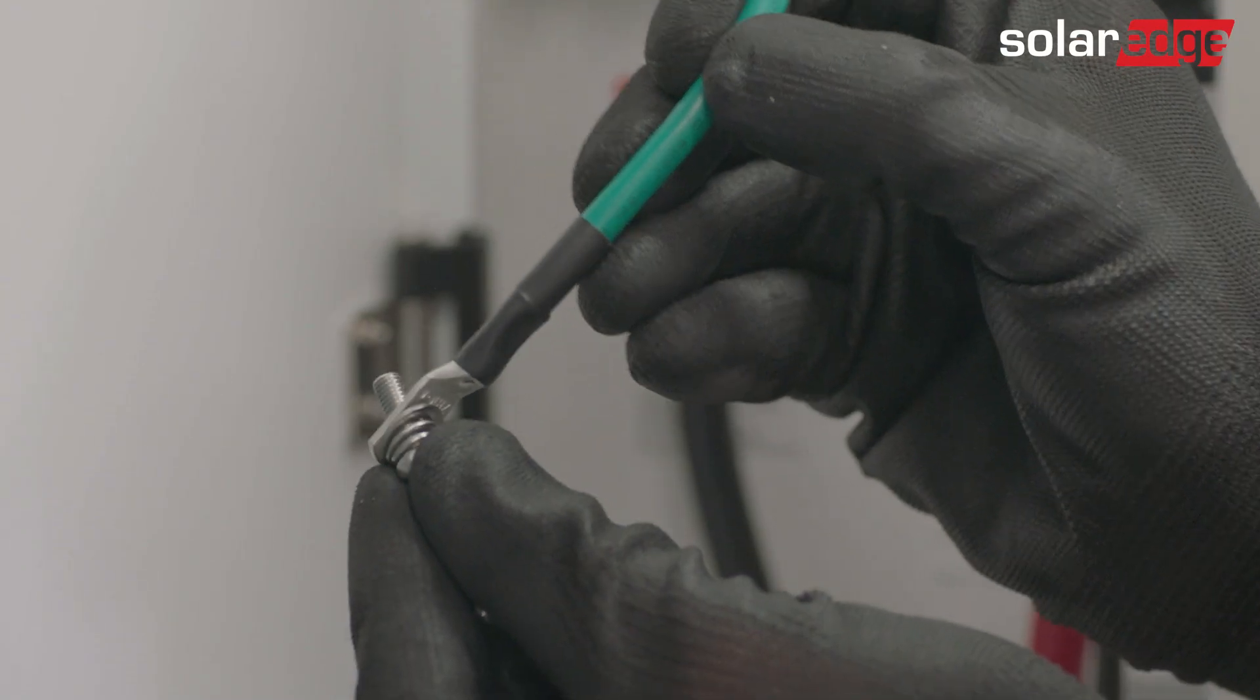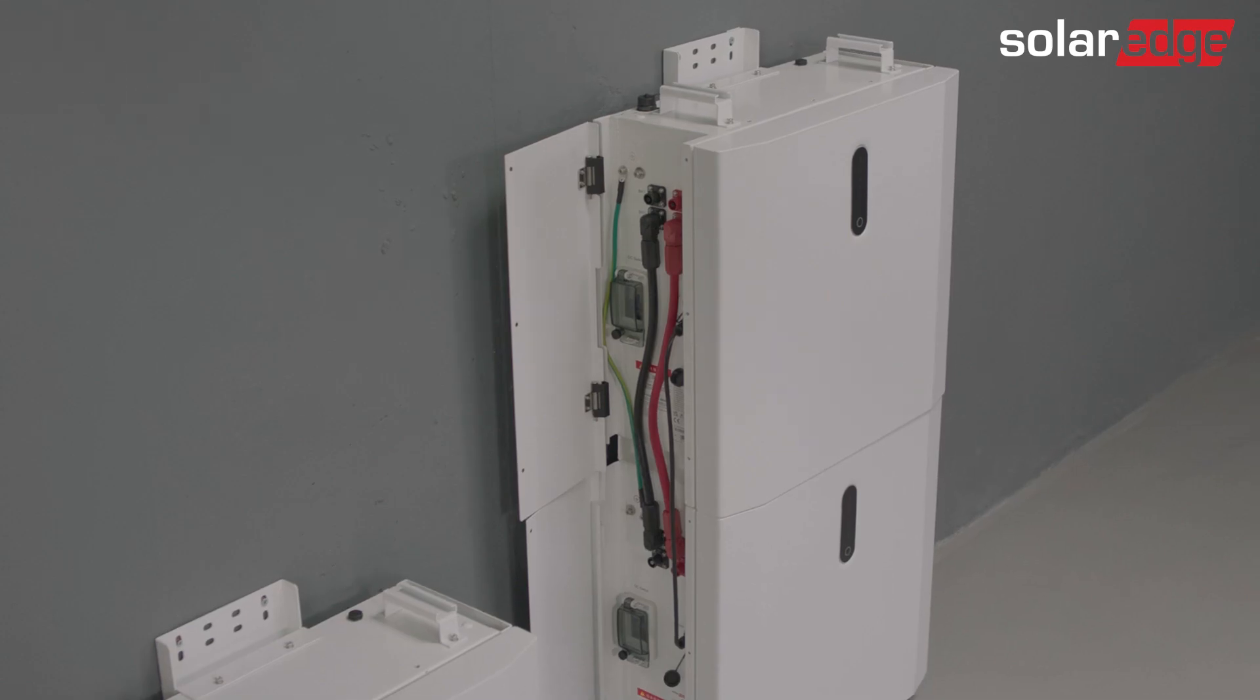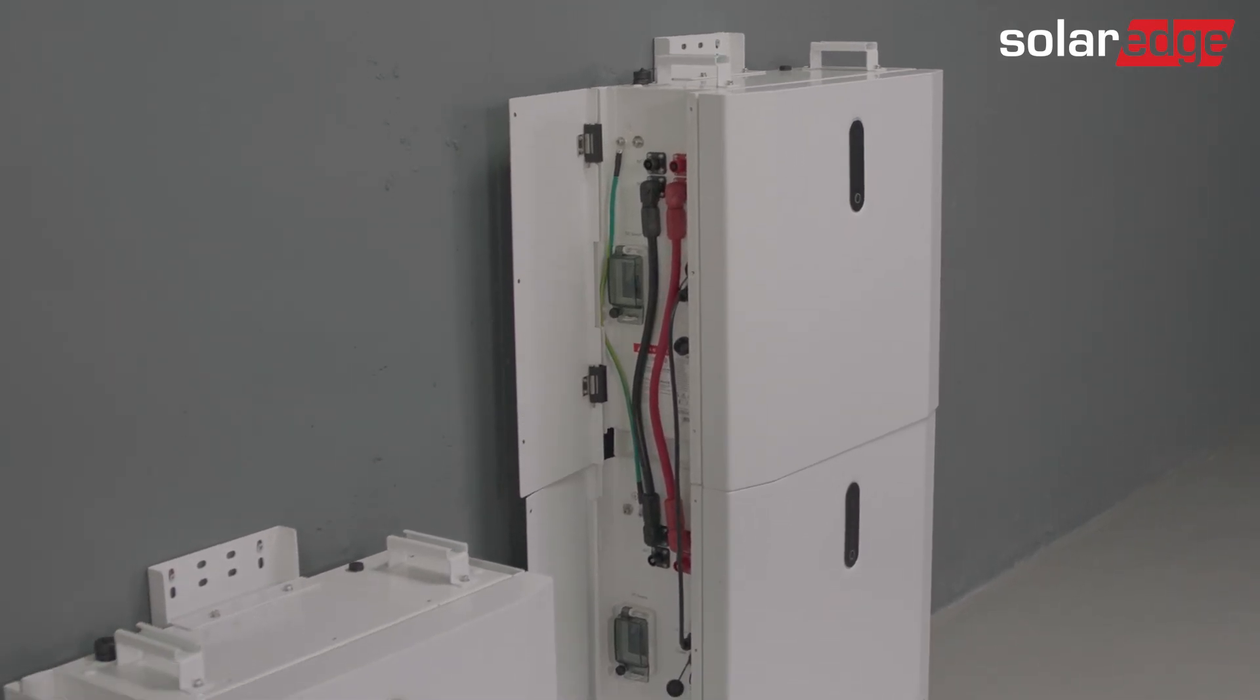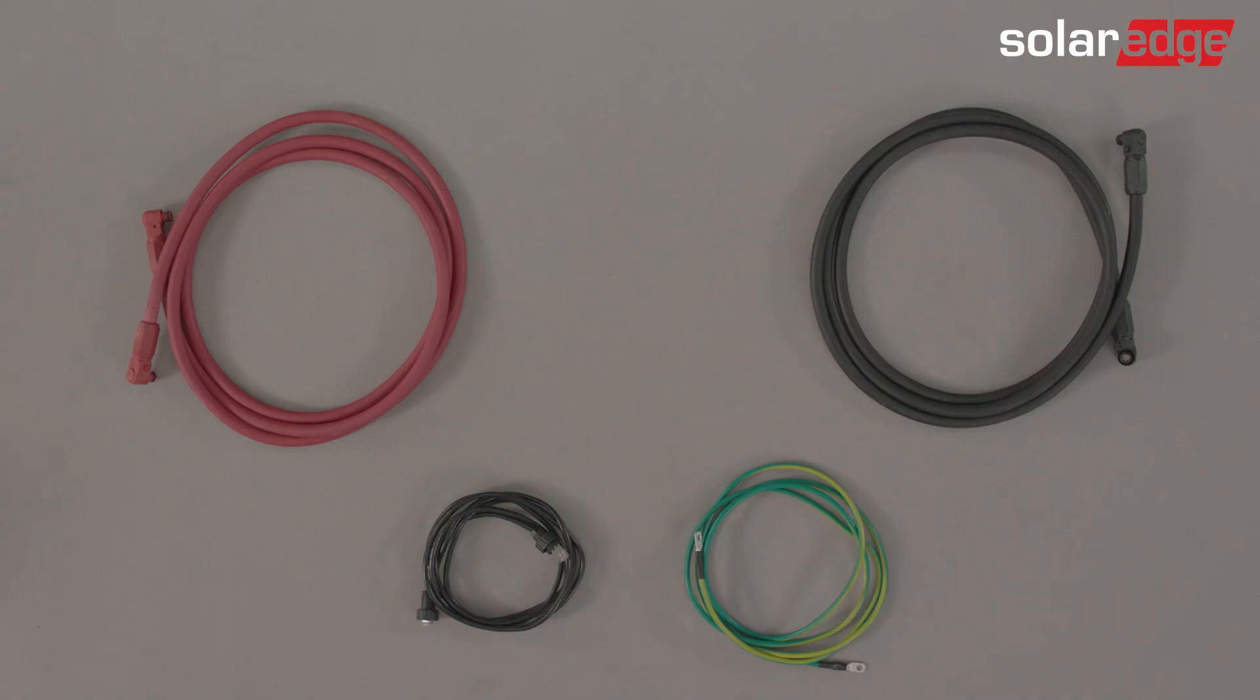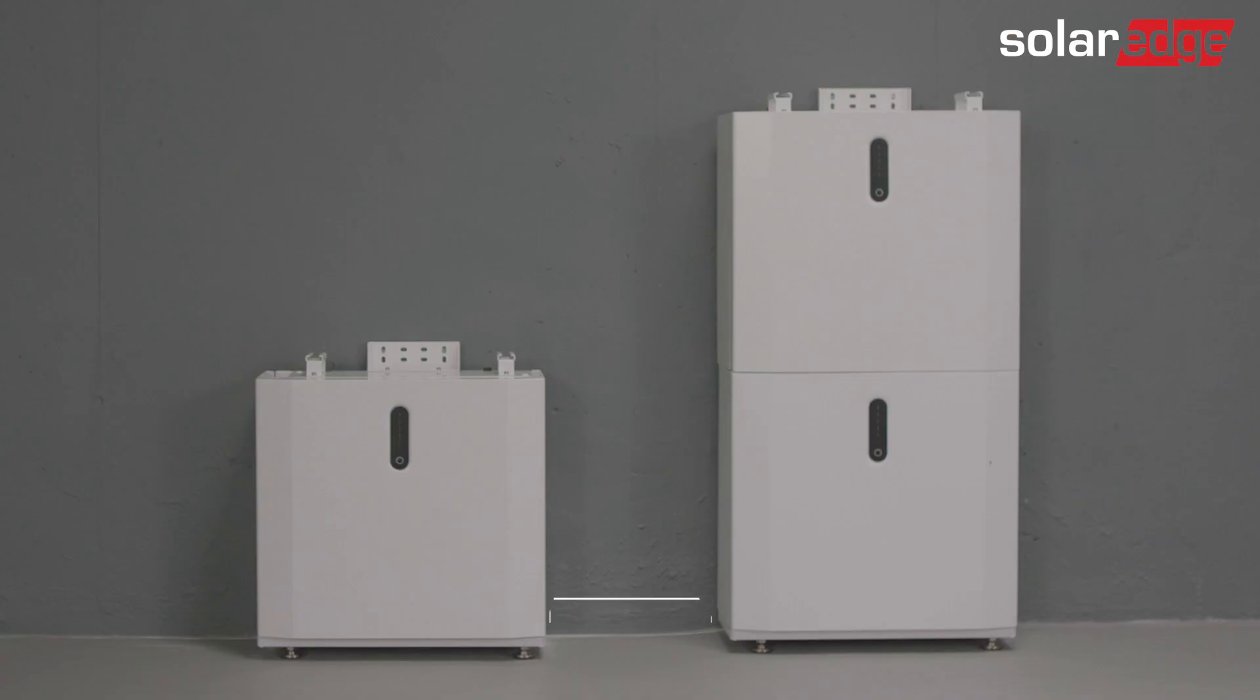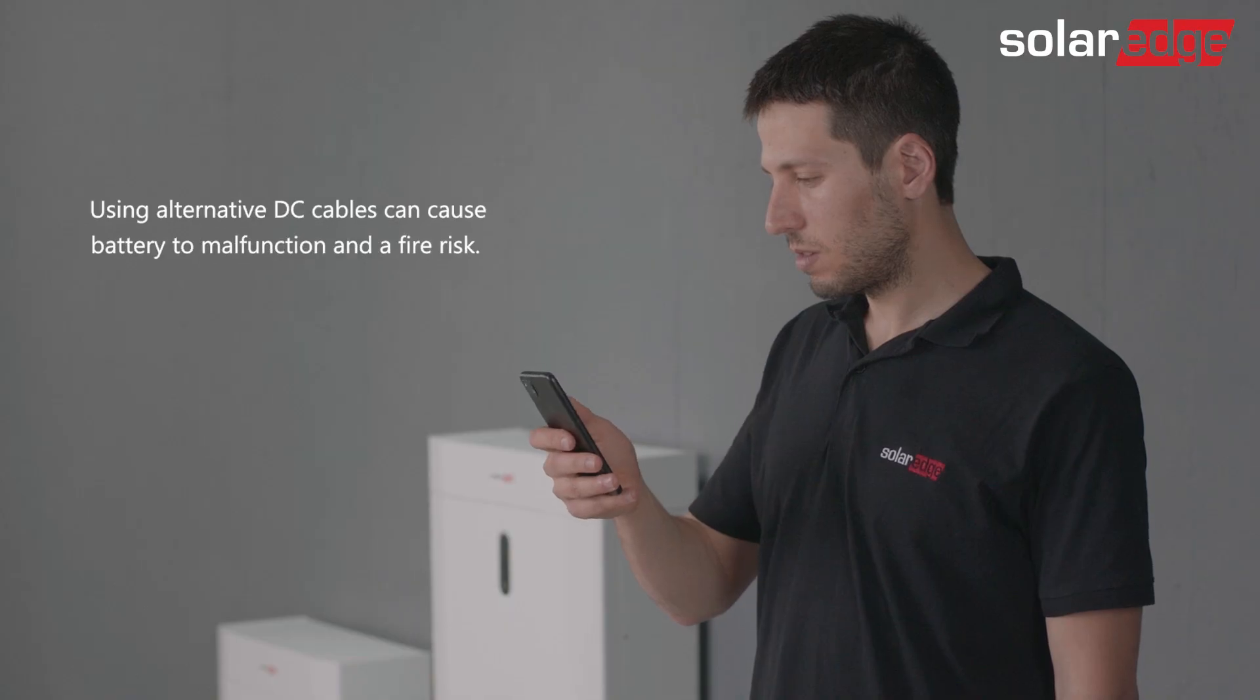In case your system contains more than two batteries, continue wiring them as demonstrated similarly. After connecting the batteries, we will move forward with the installation by connecting both towers. The tower-to-tower kit contains two DC cables, a communication cable, and a grounding cable. Please notice that the cable length fits a 30 to 40 centimeters distance from tower to tower. In case the distance is longer, you will need to crimp a cable to the desired length. Please refer to the SolarEdge user manual for detailed pin assignment.